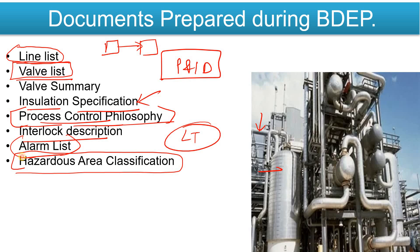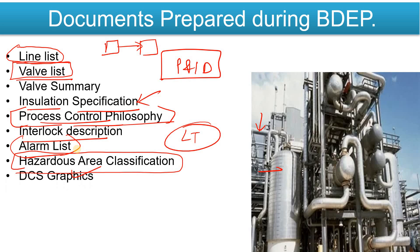The Hazardous Area Classification document is also very important. It defines what areas will come under Zone 1, Zone 2, or Zone 3, and is critical from a safety perspective.